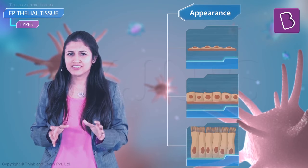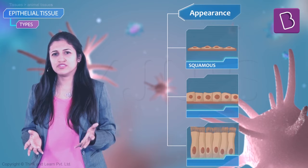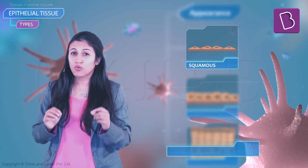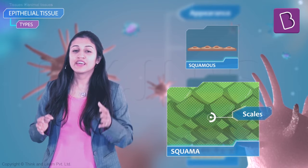The one which looks like a line has a weird name: squamous. You must be wondering what on earth they were thinking — but squamous comes from the Latin word 'squama,' which means the scale of a fish or a serpent.